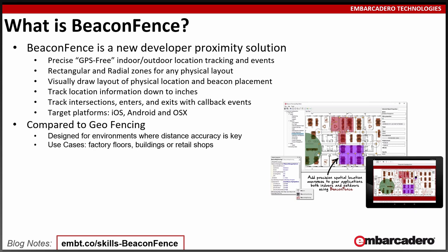Beacon Fence has a mapping technology that allows you to define rectangular and radial zones for any physical layout. The mapping tool allows you to visually draw a layout of physical locations and beacon placements. With that information, you can track location down to inches or centimeters, and track intersections when a user enters or exits.